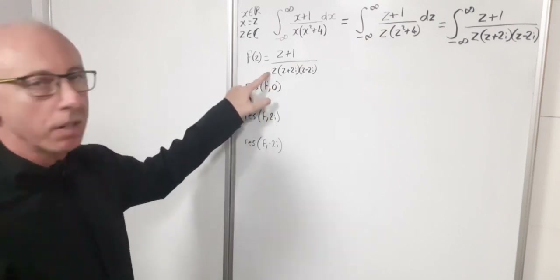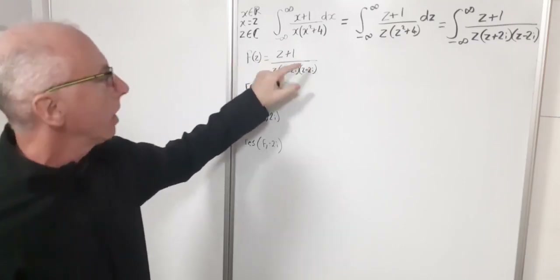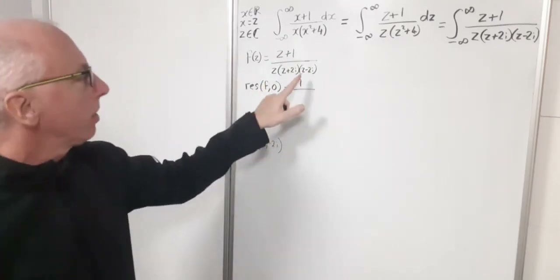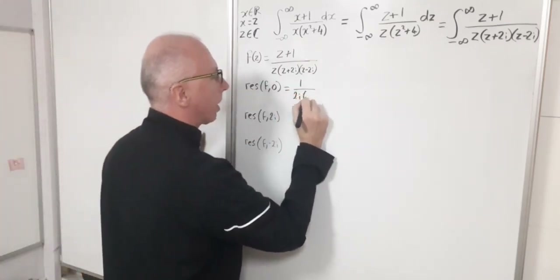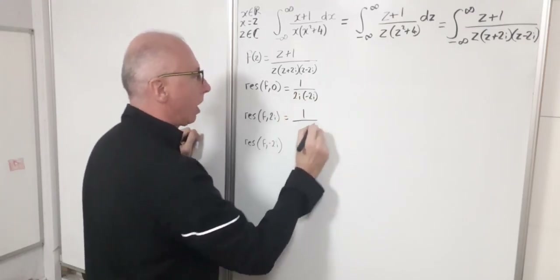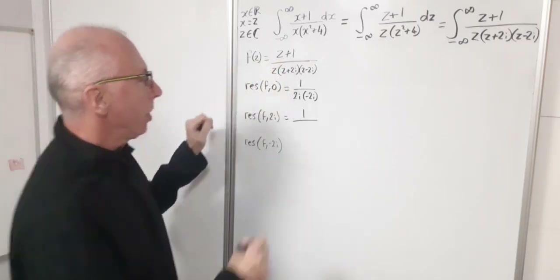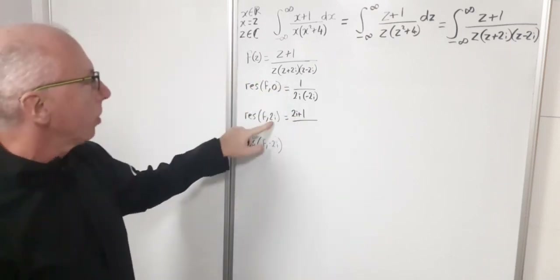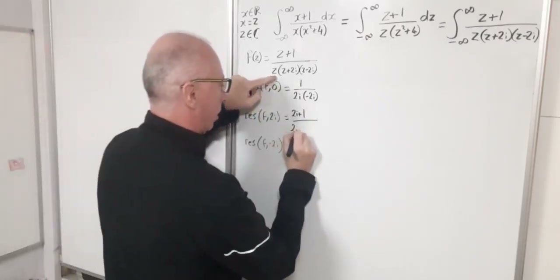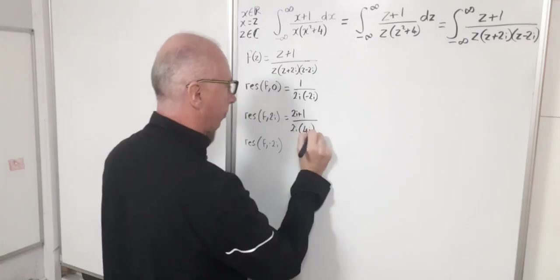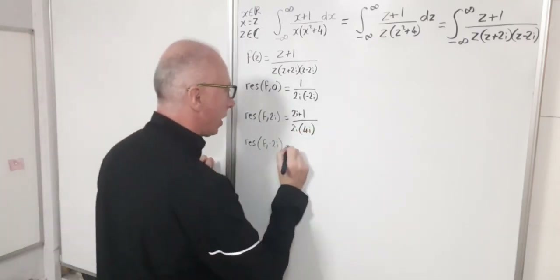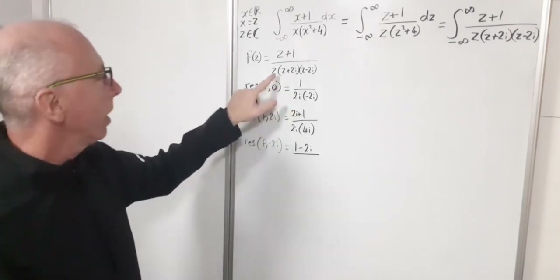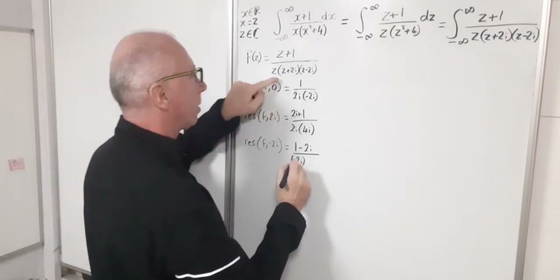Using the cover-up method: when z=0, the z factor disappears and we get 1 in the numerator and (0+2i)(0-2i) = 2i times -2i in the denominator. When z=2i, the (z-2i) factor disappears, giving numerator (2i+1) = 1+2i, and denominator 2i times (2i+2i) = 2i times 4i. When z=-2i, the (z+2i) factor disappears, giving numerator (1-2i), and denominator (-2i) times (-4i).